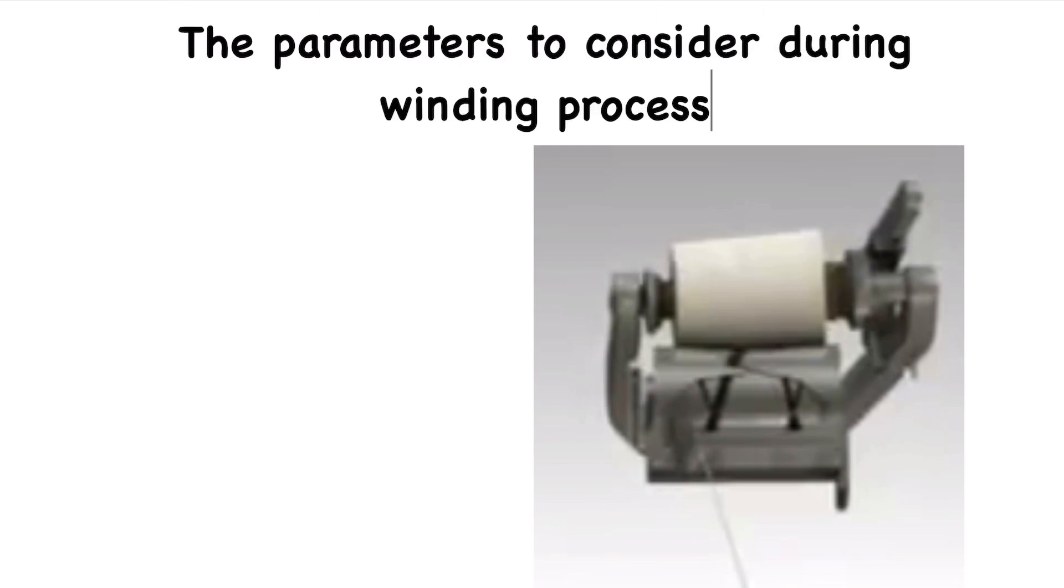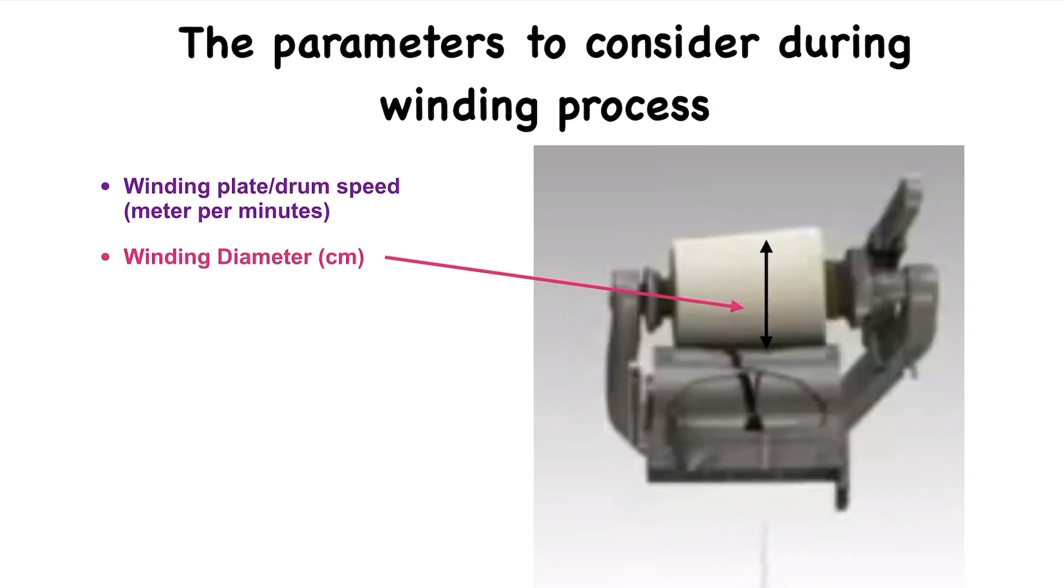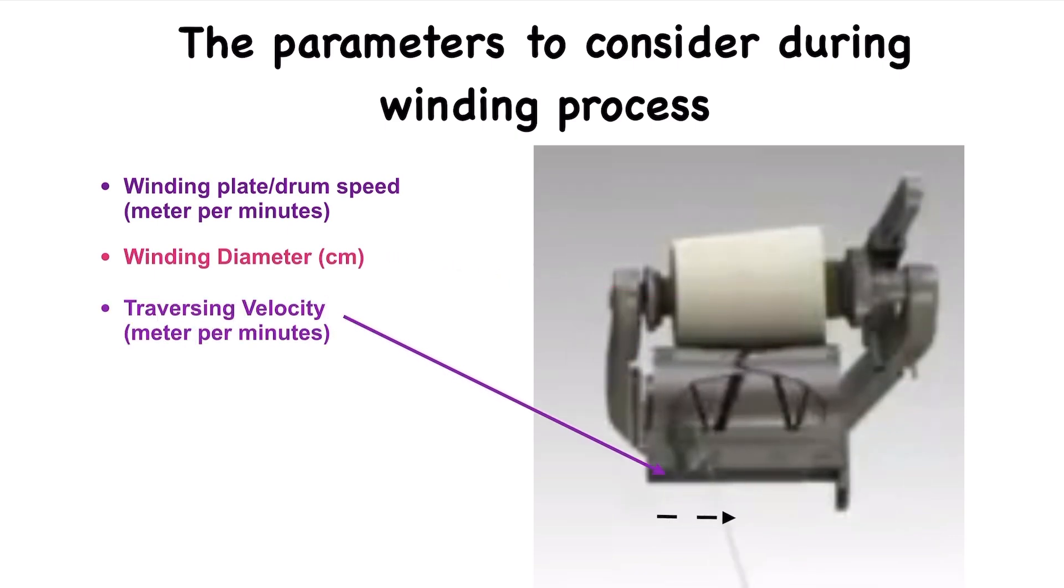The parameters to consider during winding process are: winding plate or drum speed, which is the speed with which the winding drum is rotating and is measured in meter per minutes; winding diameter, which is the diameter of the package we require and is measured in cm; and traversing velocity, which is the velocity with which the yarn moves back and forth to do the winding and is measured in meter per minutes.